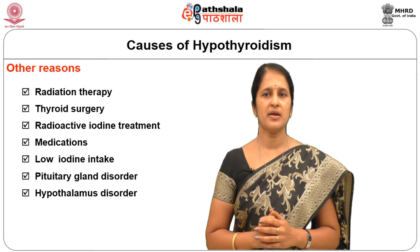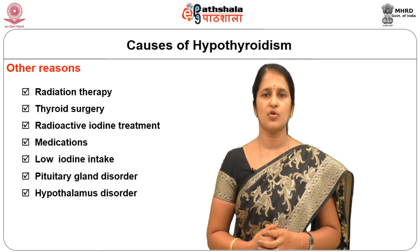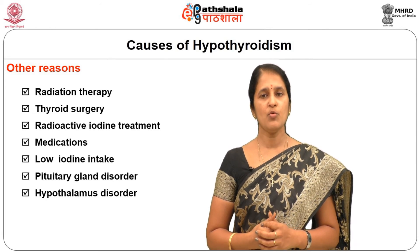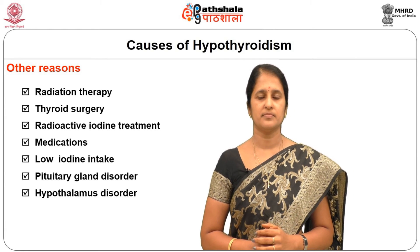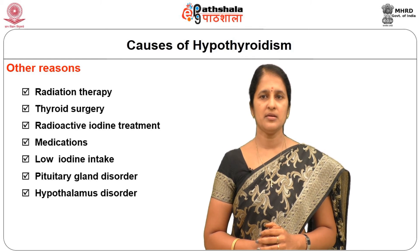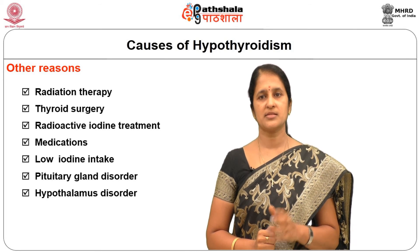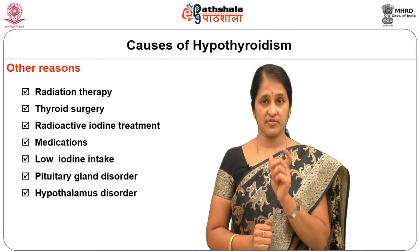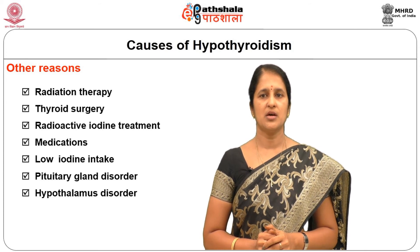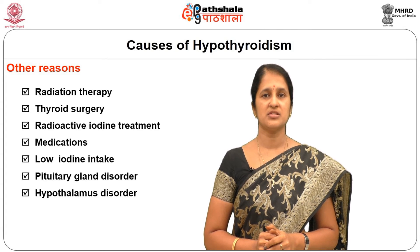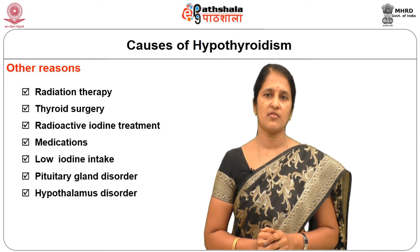Radiation treatment for lymphoma destroys thyroid cells, resulting in insufficient hormone production. Removing the thyroid gland through surgery also leads to hypothyroidism. Radioactive iodine treatment, usually done to treat hyperthyroidism, can affect the cells of the thyroid gland, leading to hypothyroidism. Certain medications to treat psychiatric conditions, heart problems, and cancer can sometimes affect the synthesis of thyroid hormones.